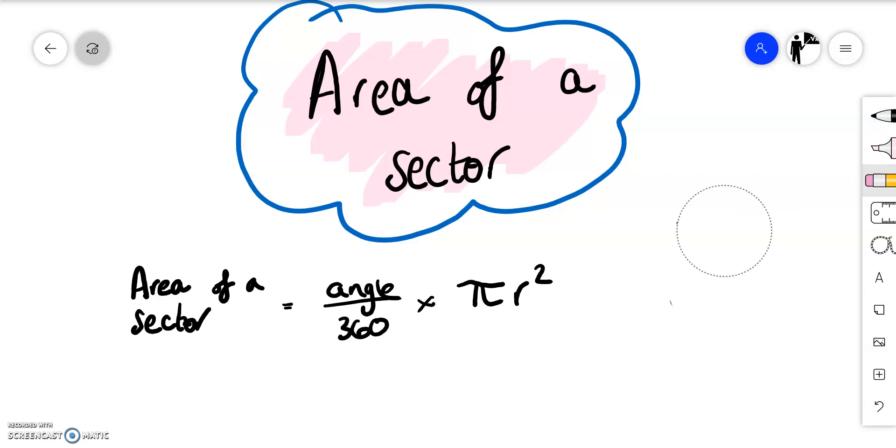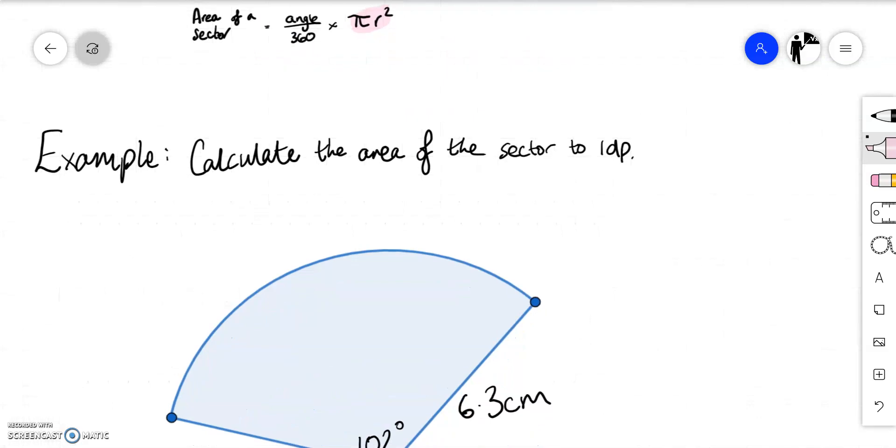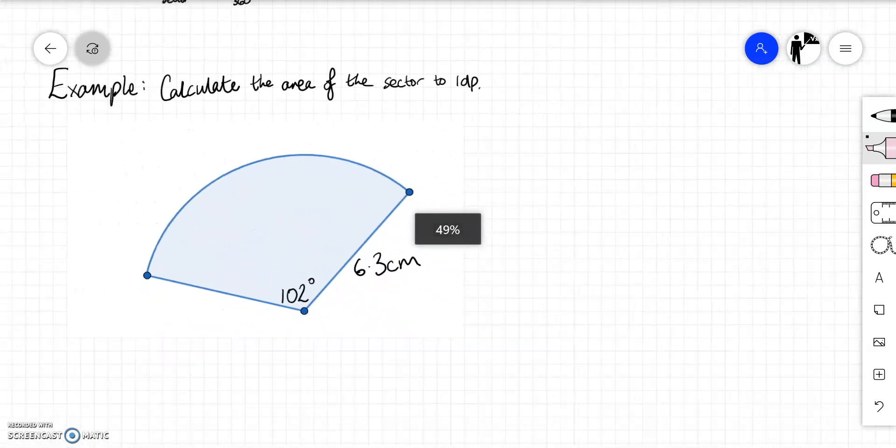So this is our formula for the area of a sector. Just remember area is pi r squared and we think about the angle over 360 that would tell us the fraction that we're working with. We've just got one example to work through here. Calculate the area of the sector to one decimal place.